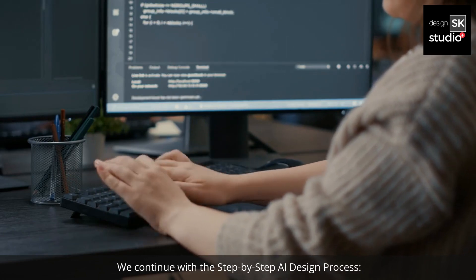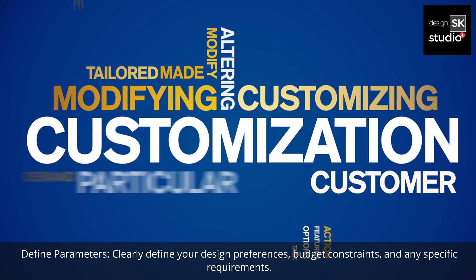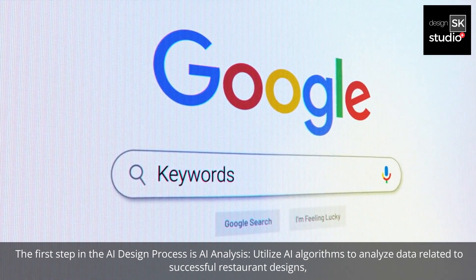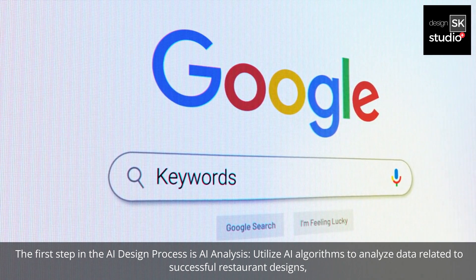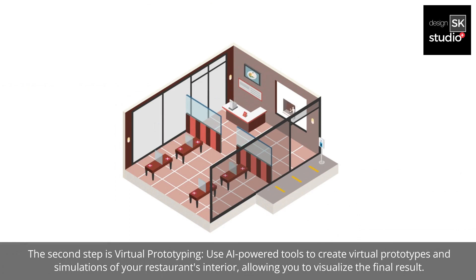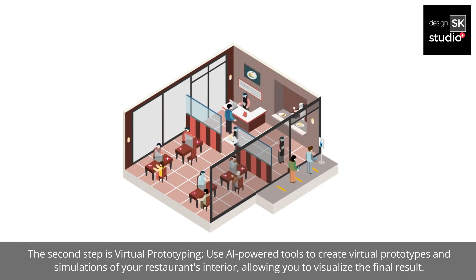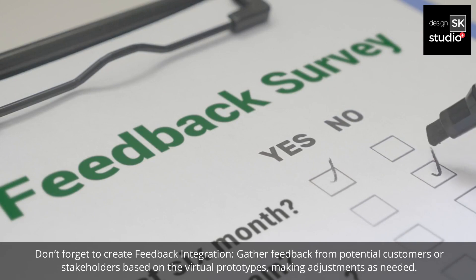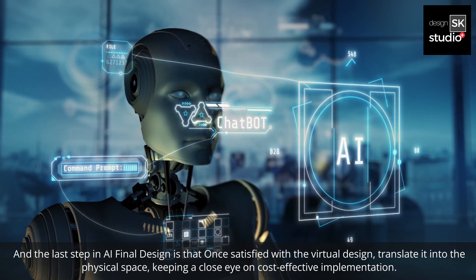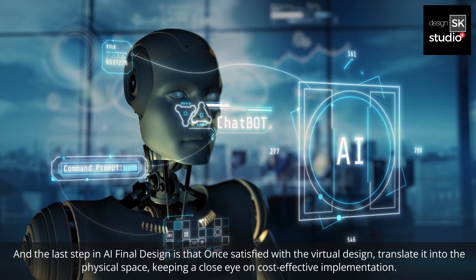We continue with the step-by-step AI design process. First, define parameters: clearly define your design preferences, budget constraints, and any specific requirements. The next step is AI analysis: utilize AI algorithms to analyze data related to successful restaurant designs, considering factors like color schemes, furniture arrangements, and lighting. Then virtual prototyping: use AI-powered tools to create virtual prototypes and simulations of your restaurant's interior, allowing you to visualize the final result. Gather feedback from potential customers or stakeholders based on the virtual prototypes, making adjustments as needed. Finally, for the AI final design, once satisfied with the virtual design, translate it into the physical space, keeping a close eye on cost-effective implementation.